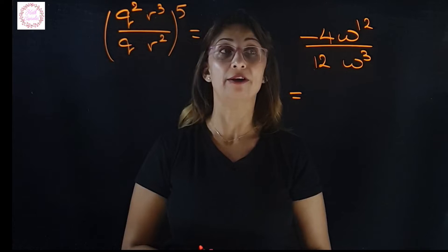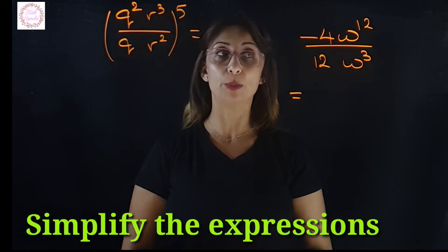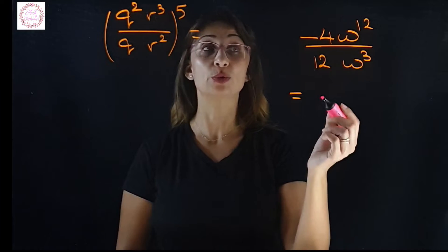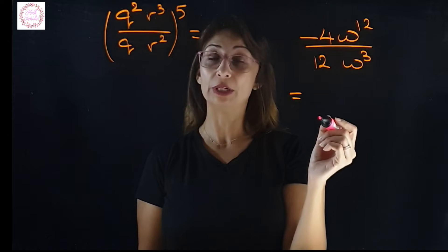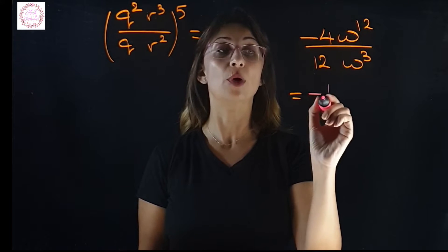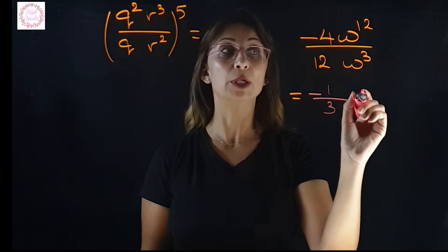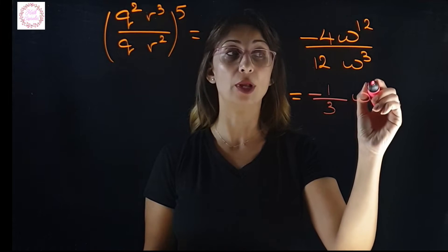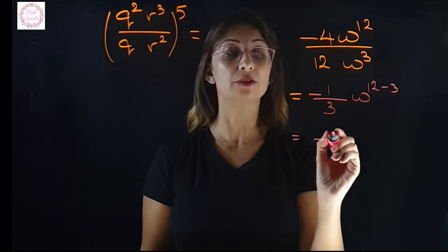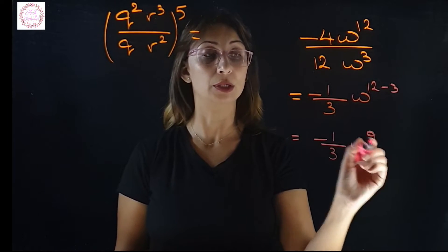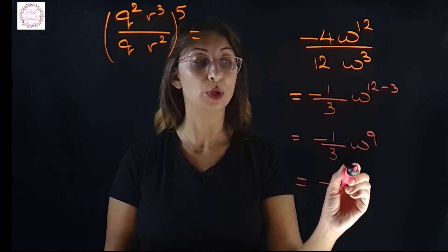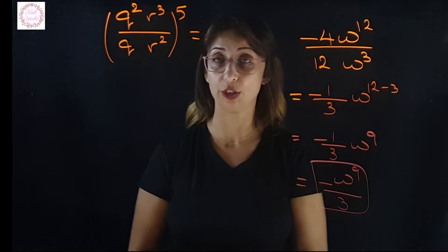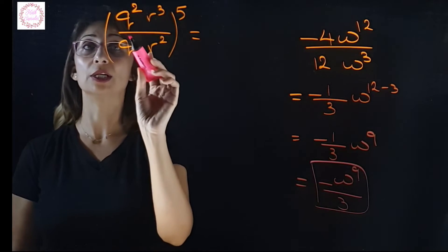Look at this example: we have negative 4w to the power of 12 over 12w to the power of 3. First, simplify the fraction — 4 and 12 divide by 4 to give negative 1 over 3. Then for w, we subtract the exponents: 12 minus 3 equals 9. So this becomes negative 1 over 3 times w power 9, or we can write it as negative w power 9 over 3.